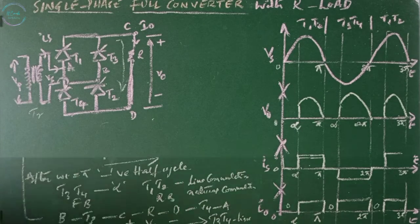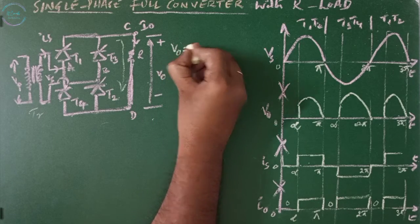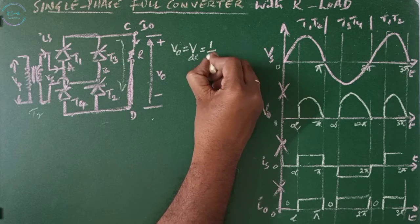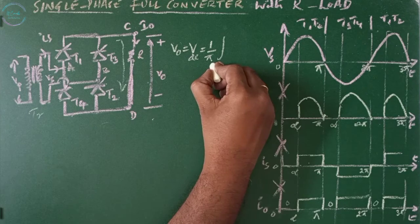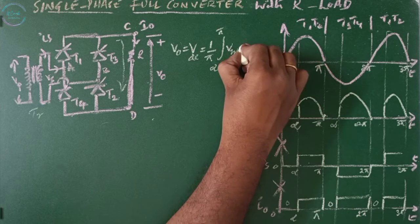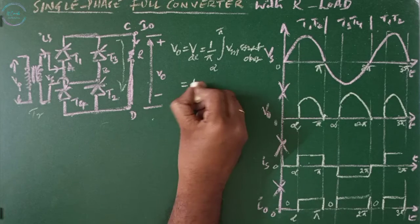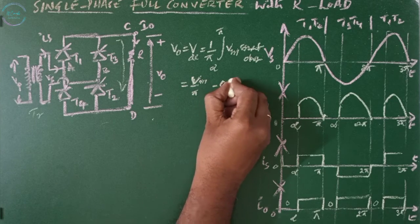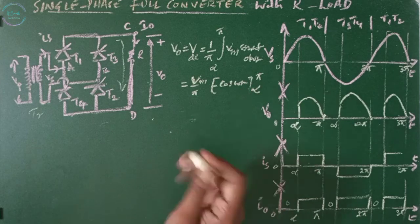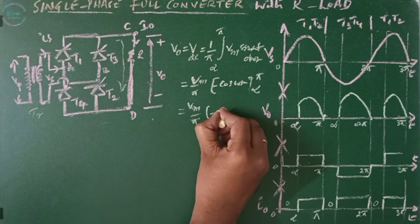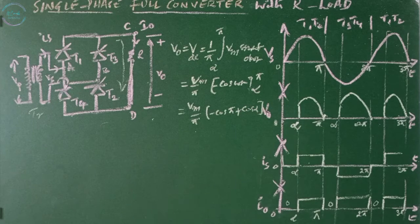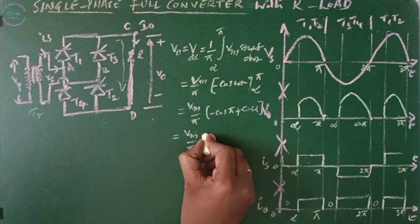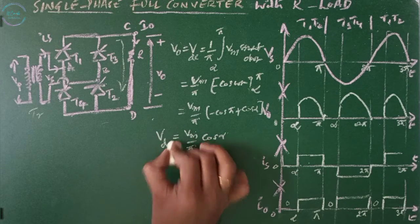The average output voltage Vdc equals (1/pi) times the integral from alpha to pi of Vm·sin(omega-t) d(omega-t), since what happens between zero to pi is symmetrical over zero to 2-pi. Integrating gives Vm/pi times [−cos(omega-t)] from alpha to pi. Substituting: Vm/pi times [−cos(pi) − (−cos(alpha))], which simplifies to Vm/pi times [1 + cos(alpha)]. Wait — this gives Vdc = (Vm/pi)(1 + cos(alpha)), or equivalently (2·Vm/pi)·cos(alpha/2)... The result is Vdc = (Vm/pi)(2·cos(alpha)).